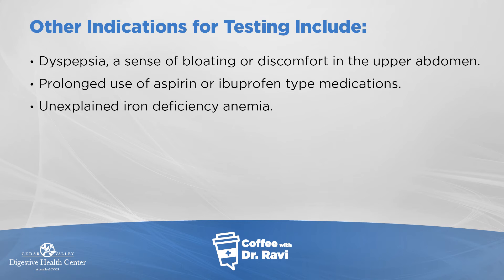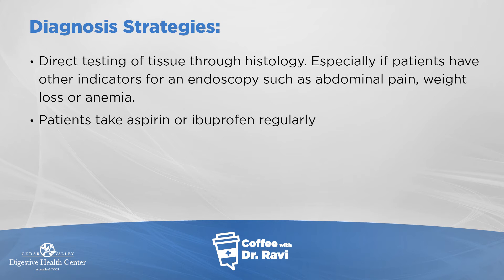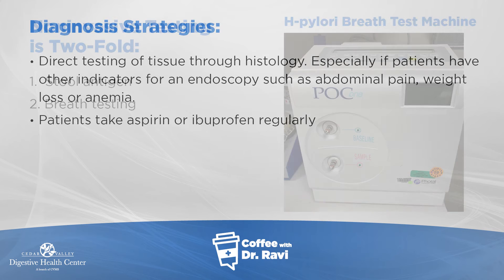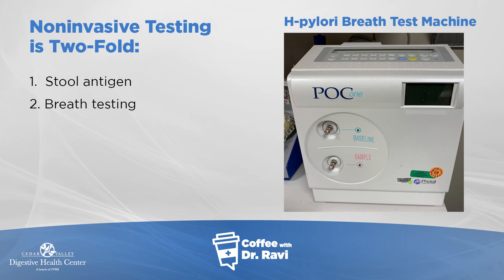So if any of these conditions are present, we want to test for H. pylori. There are two ways to test. One is through endoscopy — we take a camera, go down into the stomach, and get samples of tissue. This tissue is examined under the microscope, and sometimes you can find the organism, or sometimes you can find a pattern of injury on those biopsies.